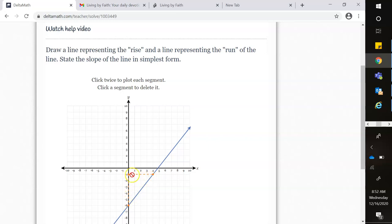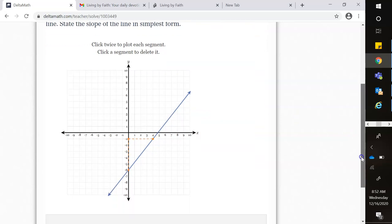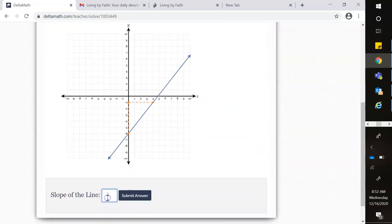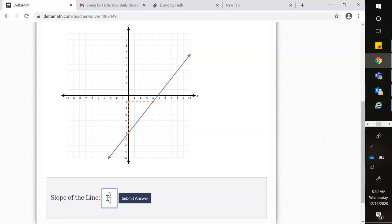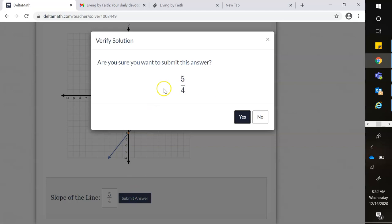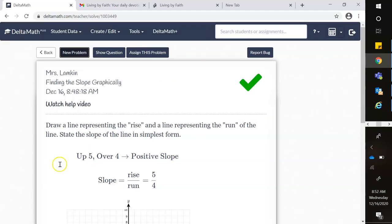I went to the right, that's positive. So it's five over four. The slope of the line is five over four. I'm going to submit. Are you sure? Yes. Check.